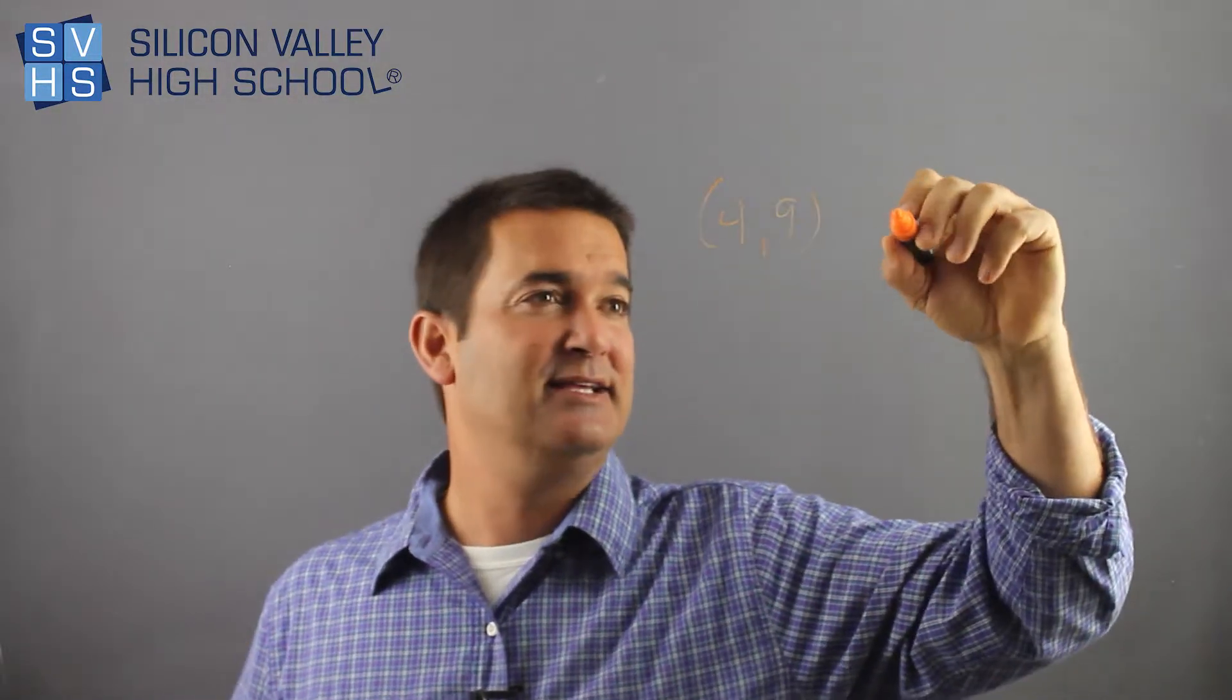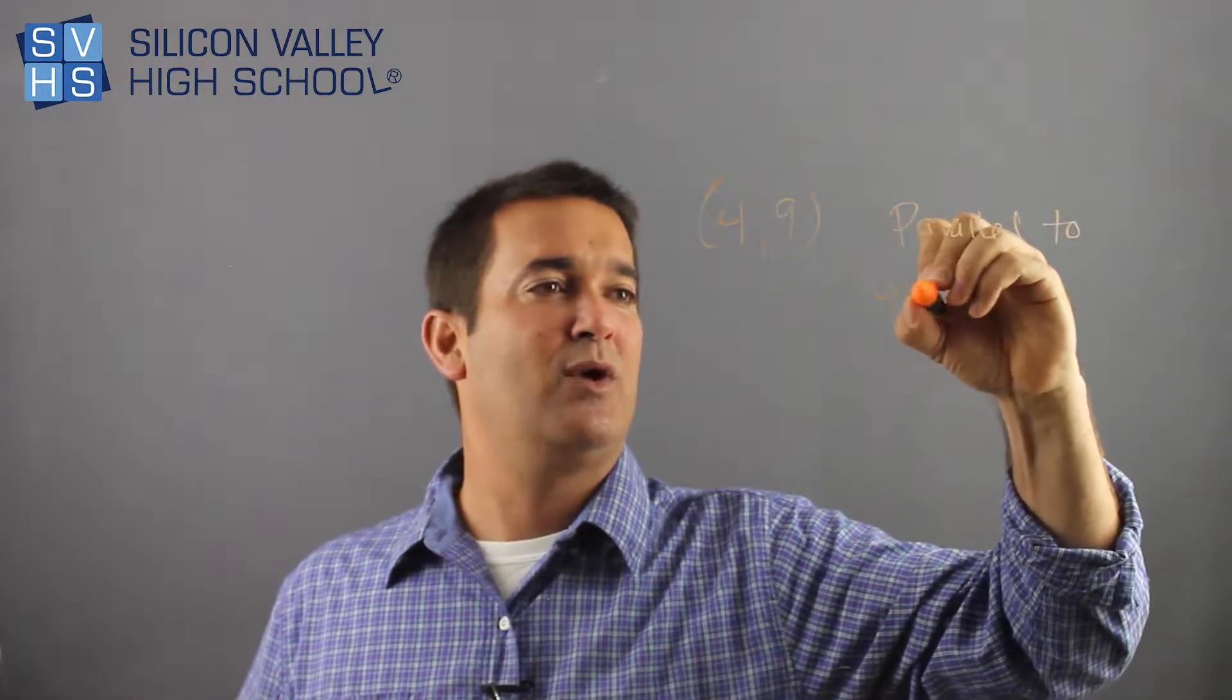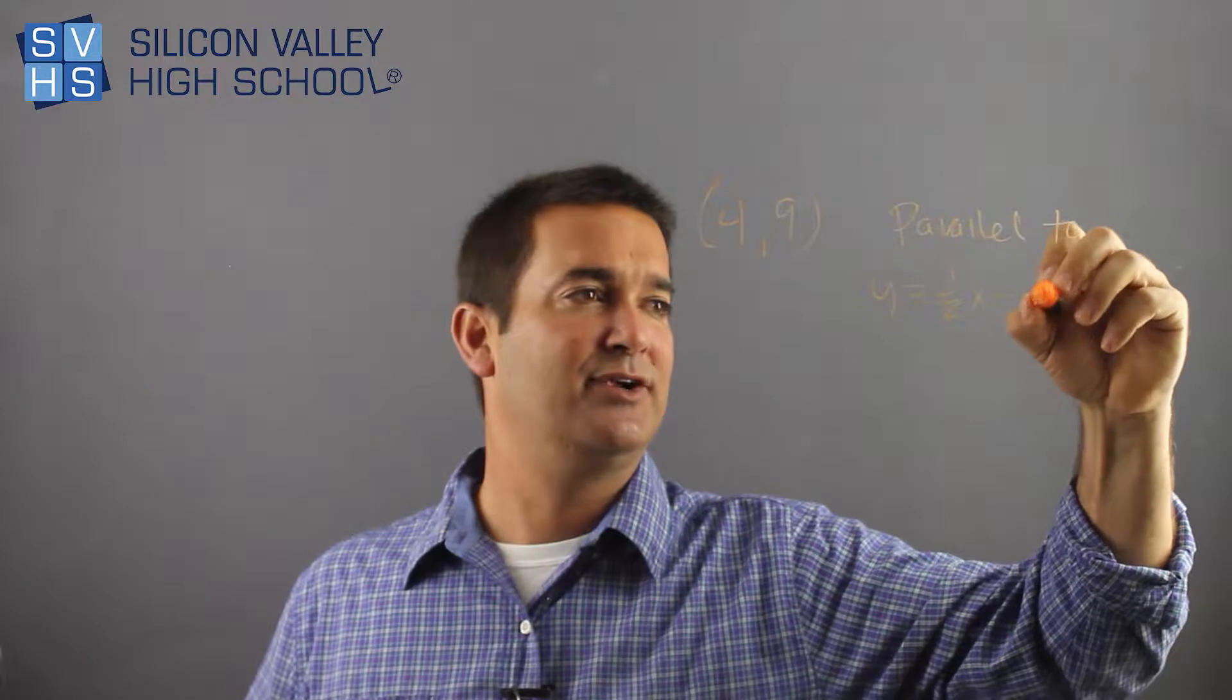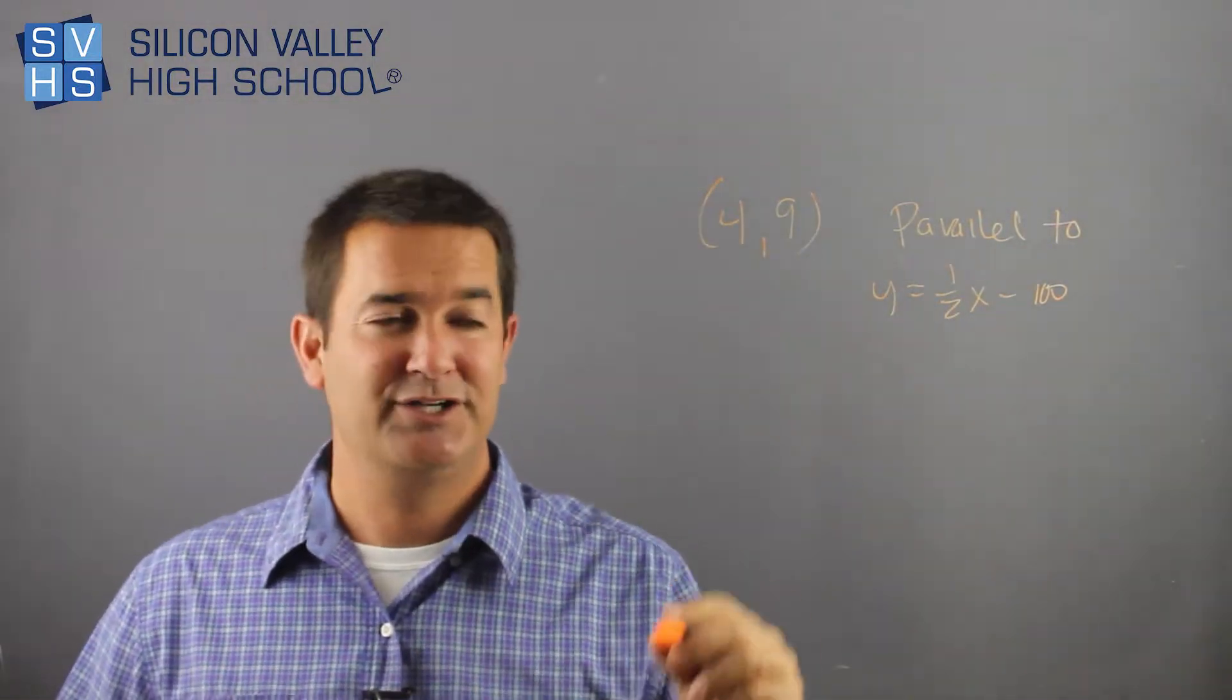So they might say this: find in point-slope form the equation of a line that goes through the point (4, 9) and is parallel to the other line, which is Y equals one-half X minus 100. The B doesn't matter in this case. You're basically borrowing his slope to finish your question.